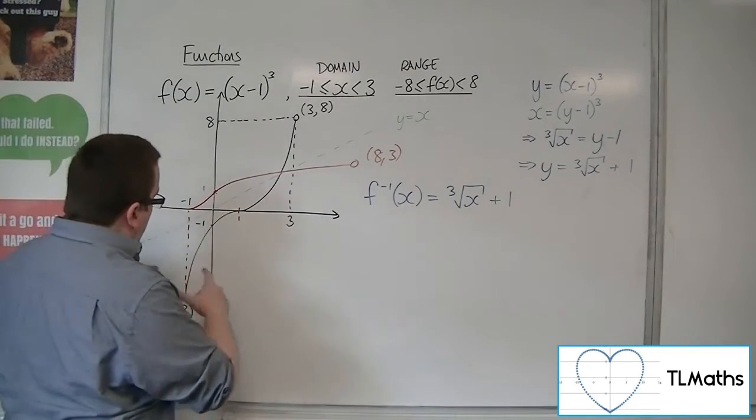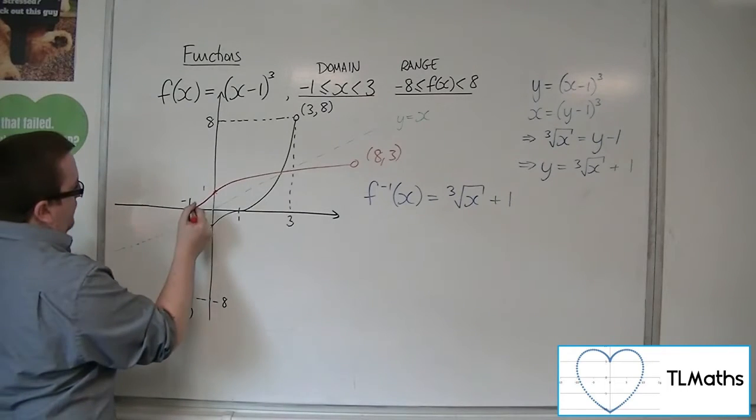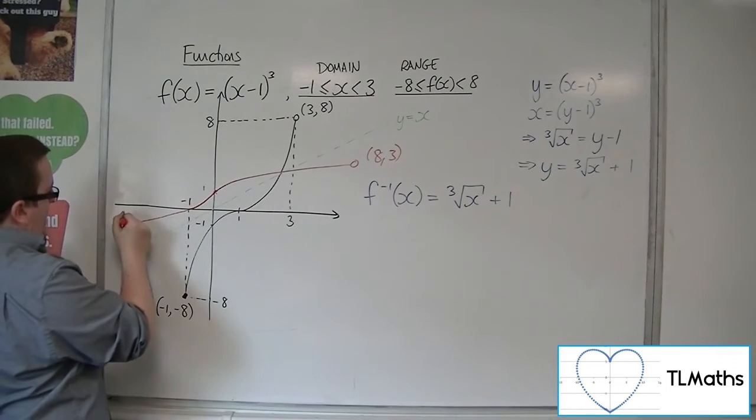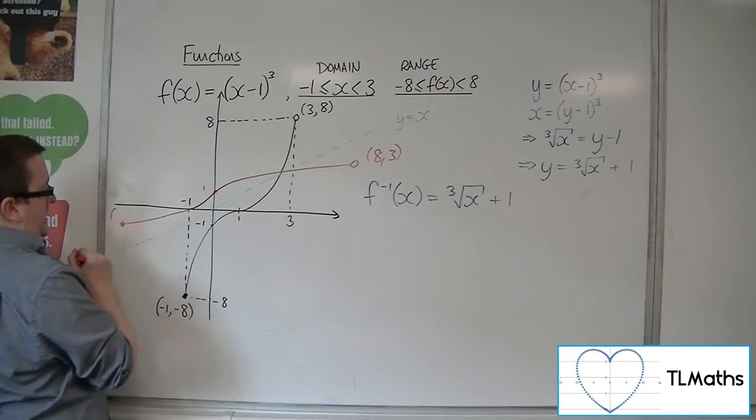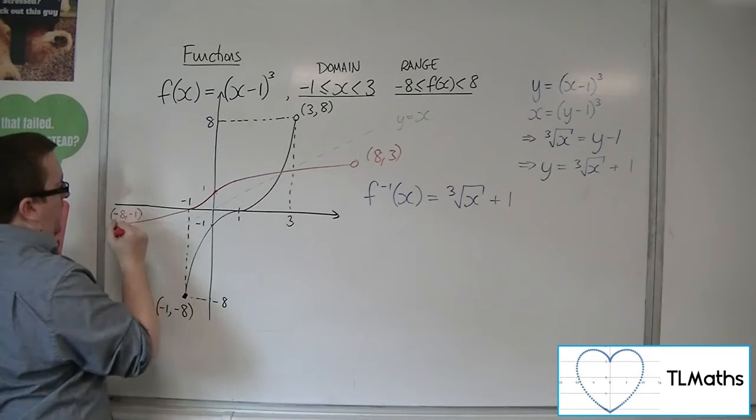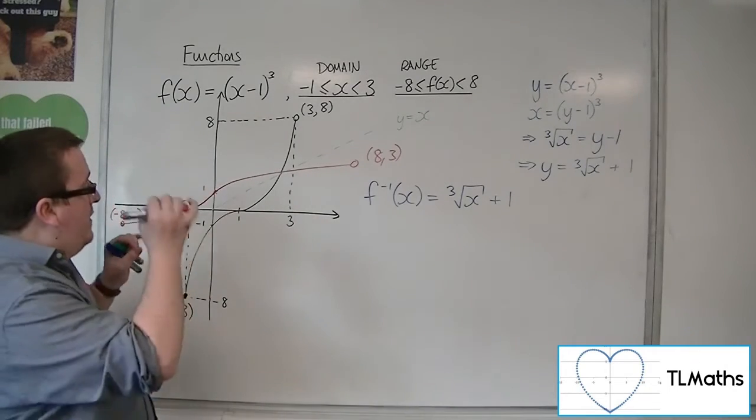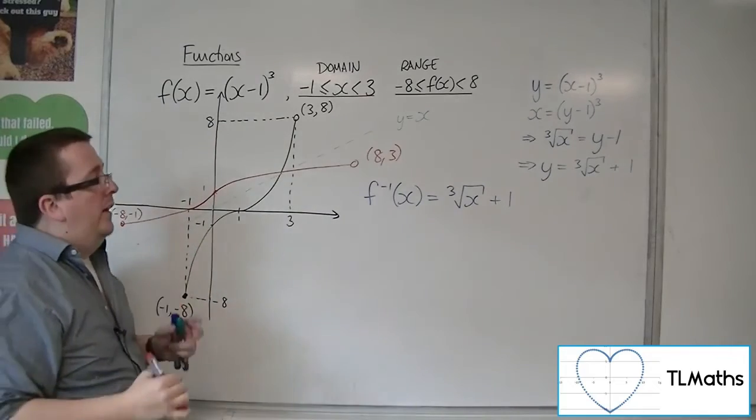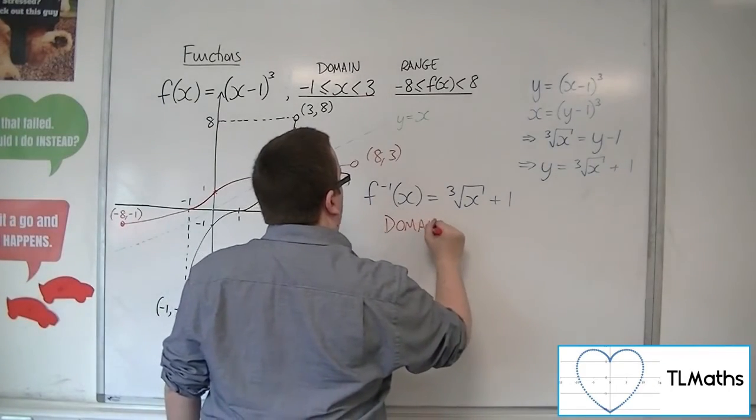Now, down here, this curve continues through, and so it ends at this point down here. Minus 1, minus 8 must be reflected in this line y equals x, and becomes minus 8, minus 1. And so, knowing those points, those end points, I can now identify the domain and range of the inverse function.